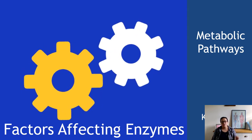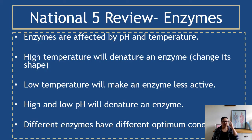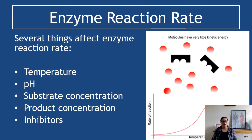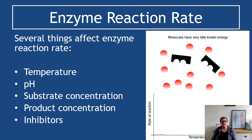We're probably not going to focus on pH and temperature because those are things you should know from National 5. From National 5: high temperature will denature an enzyme and change its shape permanently; low temperature will make an enzyme less active; high and low pH can denature an enzyme; and different enzymes have different optimum conditions. A key point is to use the idea of enzymes being more active or less active — not faster or slower.